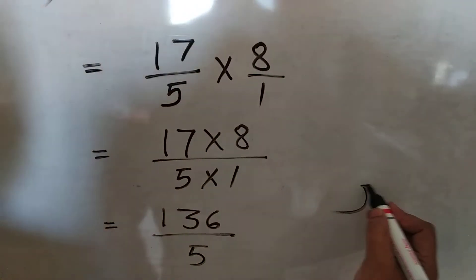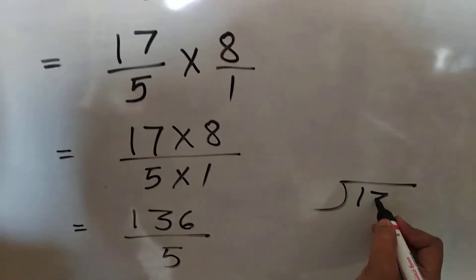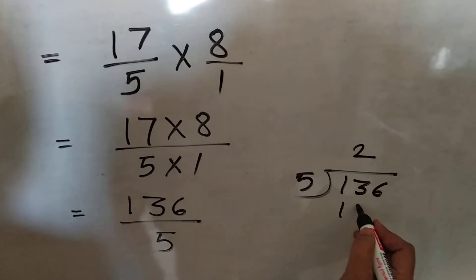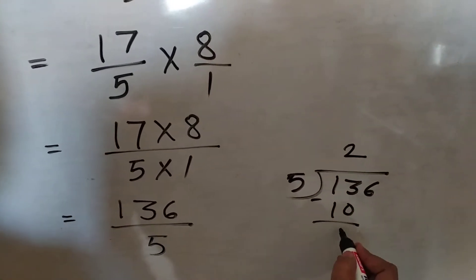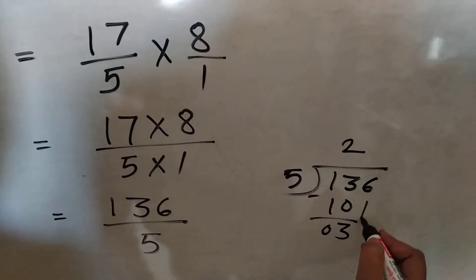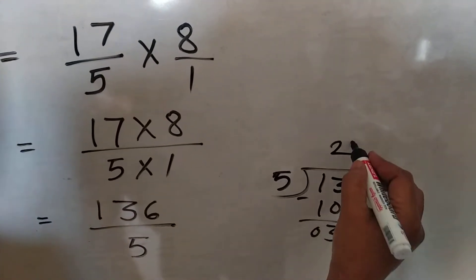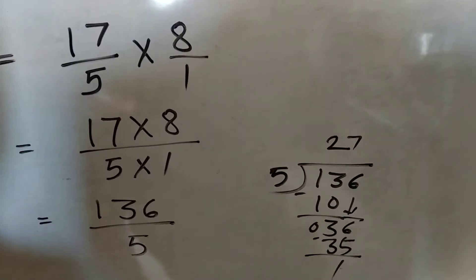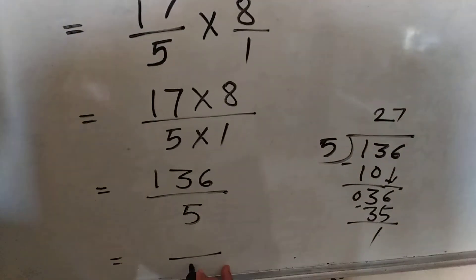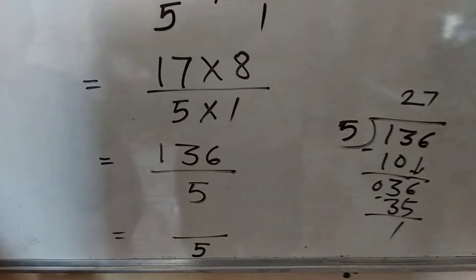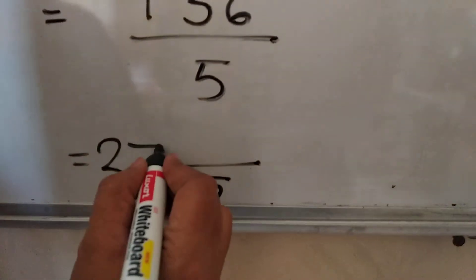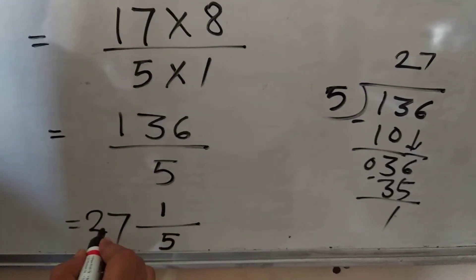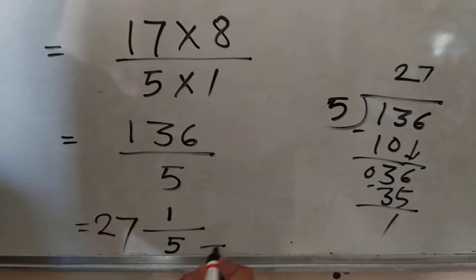But our question is that we have to convert this improper fraction back into a mixed number. So do the rough work here: 136 upon 5 means divide by 5. 5 goes into 13 twice making 10, 13 minus 10 is 3, bring down 6 to get 36. 5 sevens are 35, 36 minus 35 is 1. Denominator is 5, quotient is 27, remainder is 1. So the answer is 27 and 1/5.